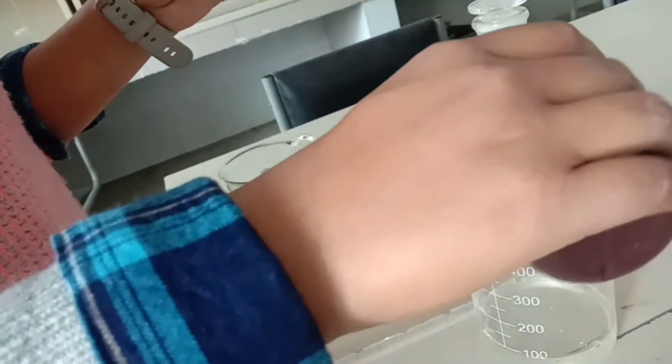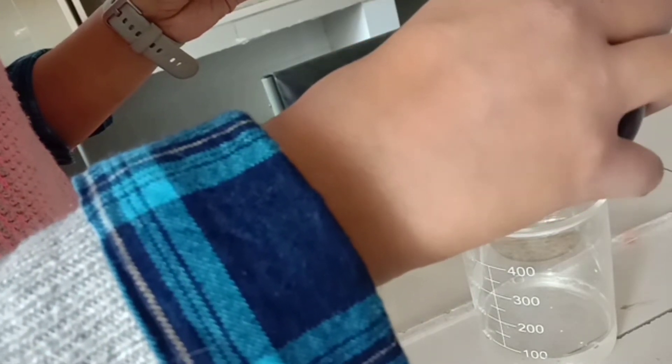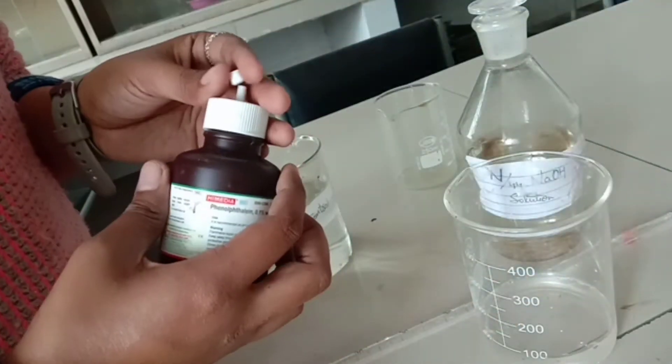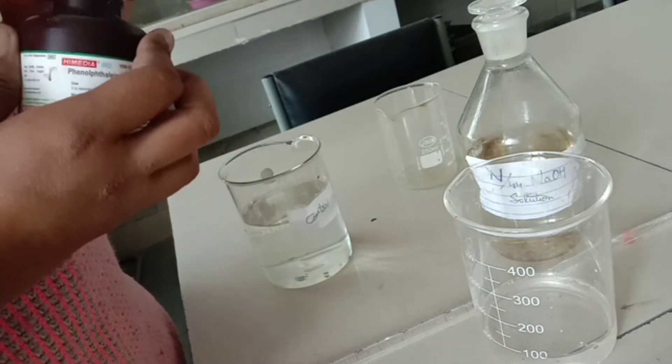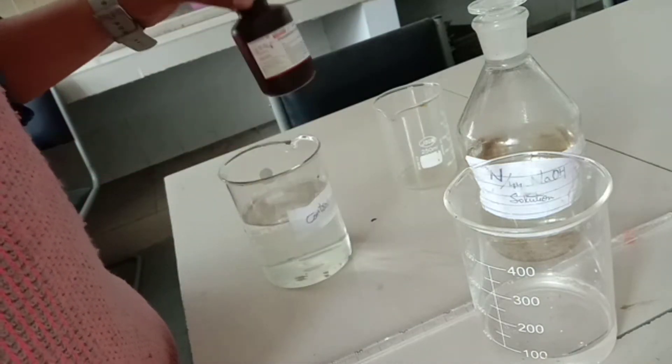Then we will use phenolphthalein indicator. 10 drops of phenolphthalein indicator will be added in the sample. If the color of water does not change to pink, it means the CO2 is present. If the water color changes to pink, it means the CO2 is not present in the water.